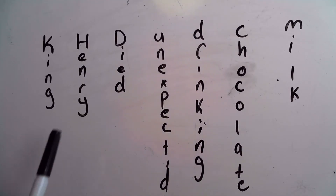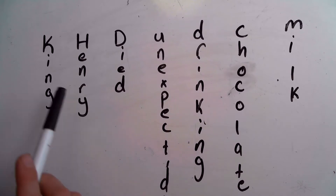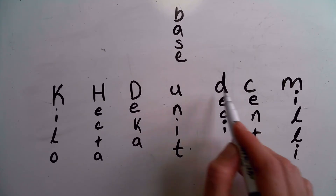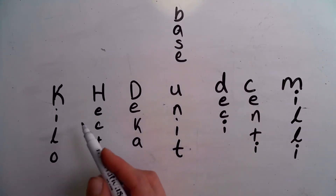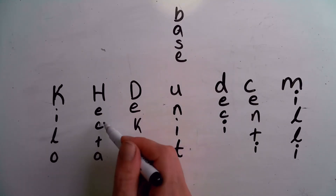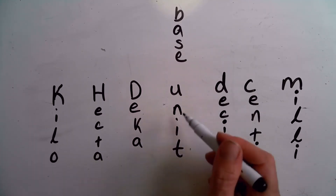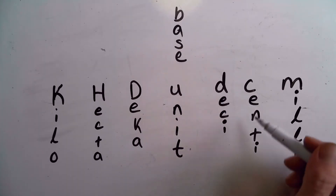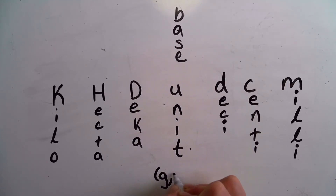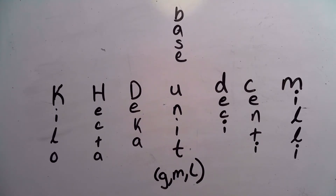If you say this sentence in your head, it should help you write out the letters: King Henry died unexpectedly drinking chocolate milk. And these are what the actual prefix names are: K is for Kilo, H is for Hecta, Deca, the base unit, Deci, Centi, and Milli. Base units are going to be things like grams, meters, or liters — those single words before we attach another word in front of them.